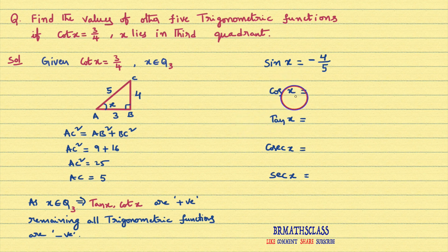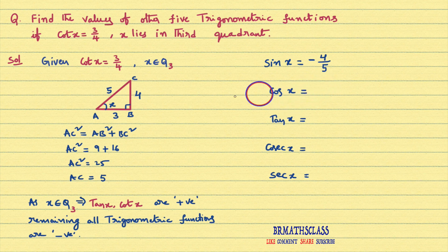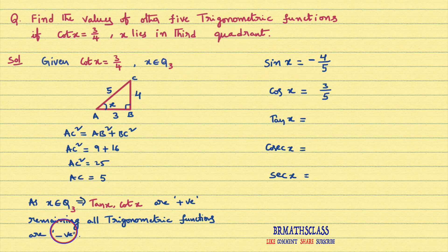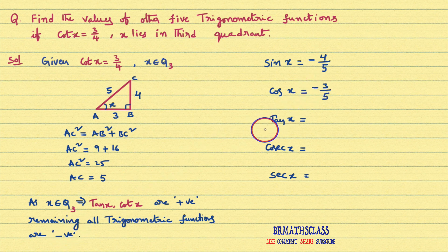Cos x is defined as adjacent side by hypotenuse. Adjacent side is 3 divided by hypotenuse 5. As X lies in third quadrant, cos x is negative. Therefore, cos x equals minus 3 by 5.